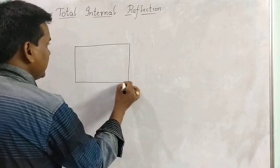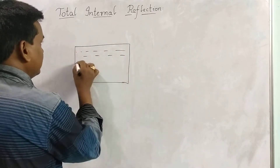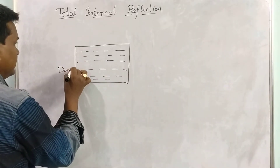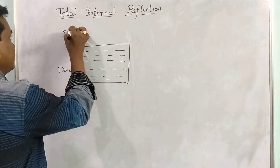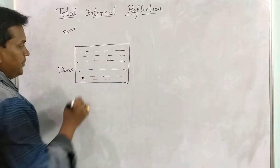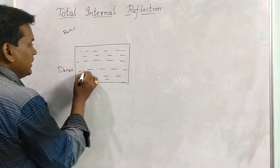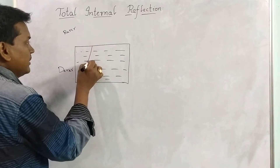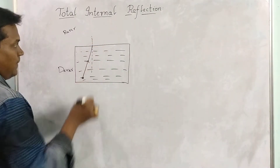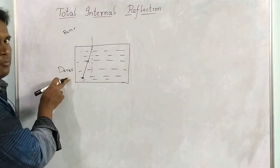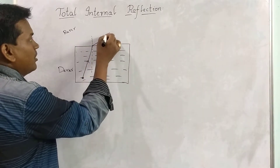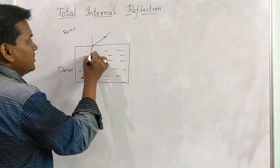Here we have a denser medium and a rarer medium. There is a source of light, and from this source a ray is incident from the denser medium. This is the normal, and as the ray is traveling from optically denser medium to rarer medium, the ray will bend away from the normal.